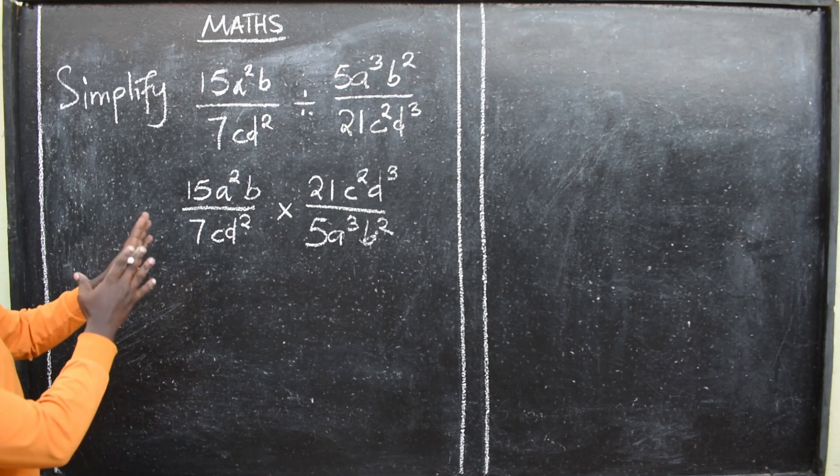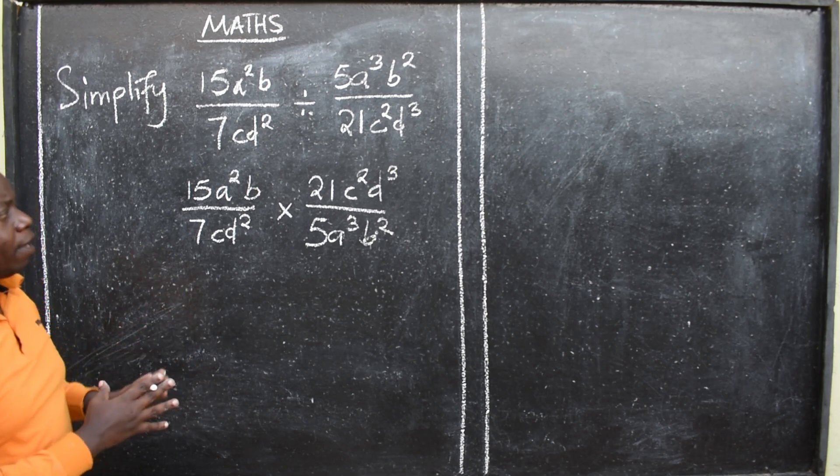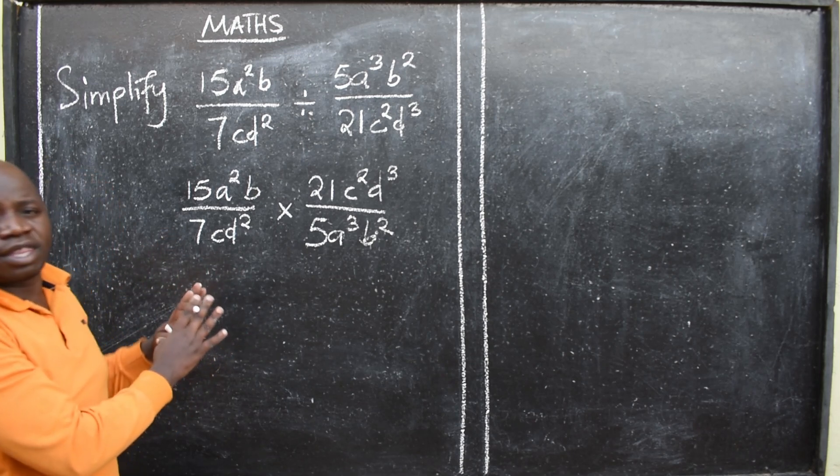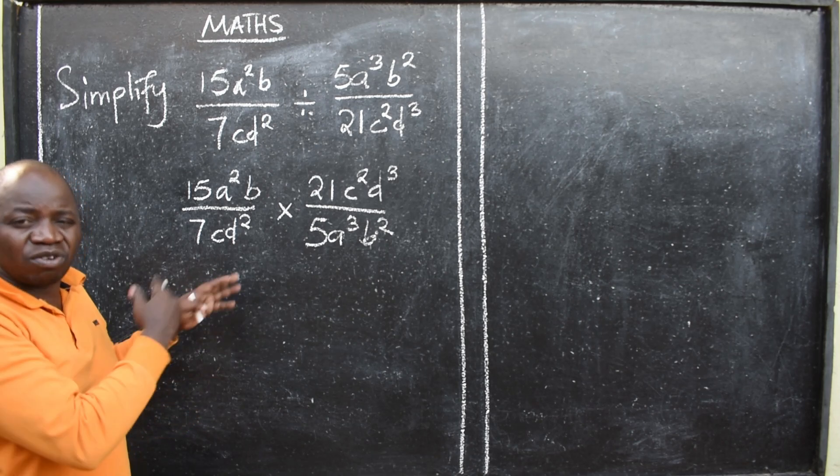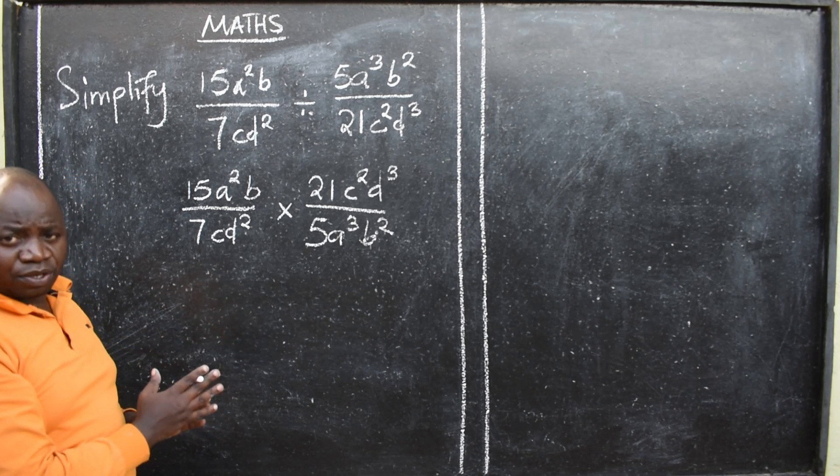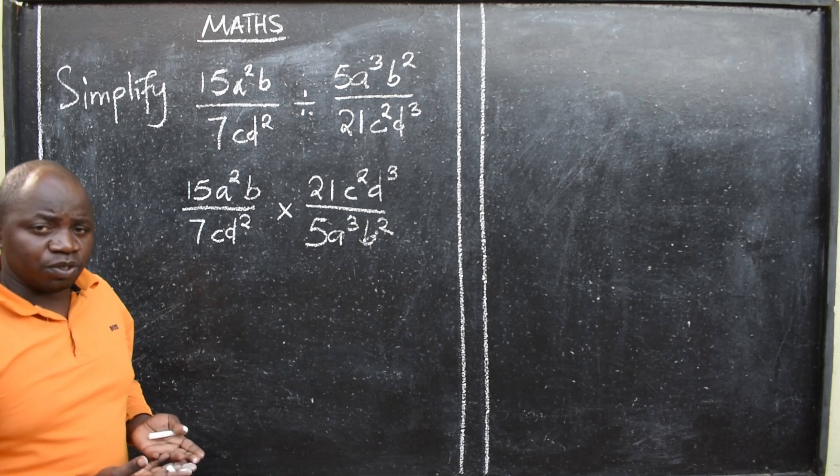What next? We have letters, variables. We also have numbers. So you can choose to start with numbers. You reduce the numbers. Those that can be reduced, those that can be cancelled, you cancel them. Then you come to letters. Don't be doing things at the same time. They might confuse you.